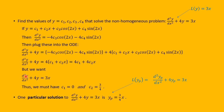We want this to equal 3x, so we can adjust c1 and c2 to make 4c1 plus 4c2x equal to 3x. We let c1 equal zero and c2 equal 3/4, giving zero plus 4 times 3/4 times x, which is 3x. So here are c1 and c2 that work. We find a particular solution y_p equals 3/4 x. This solution satisfies the differential equation: the second derivative of y_p plus 4 times y_p equals 3x.